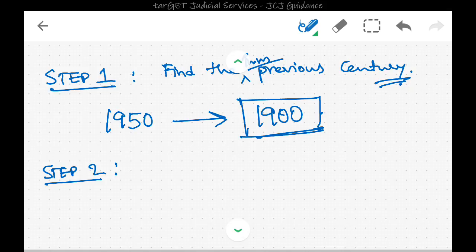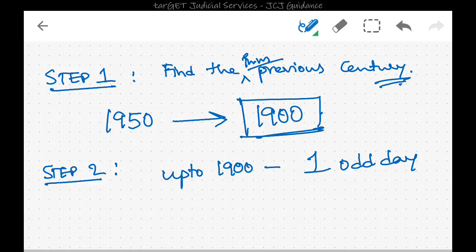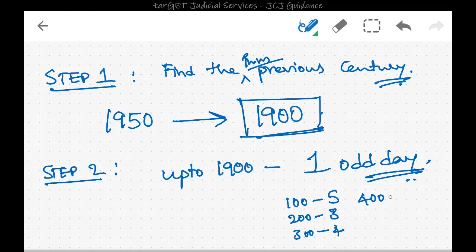Step two: find the number of odd days at the end of 1900. Up to 1900 the number of odd days is one. We know that for 100 there are five odd days, for 200 there are three, for 300 there are four, for 400 (a leap century) there are zero. Continuing: 1700 has five odd days, 1800 has three odd days, and 1900 has one odd day.